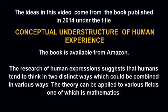The ideas in this video come from the book published in 2014 under the title 'Conceptual Understructure of Human Experience.' The book is available from Amazon. The research of human expressions suggests that humans tend to think in two distinct ways, which can be combined in various manners. The theory can be applied to various fields, one of which is mathematics.